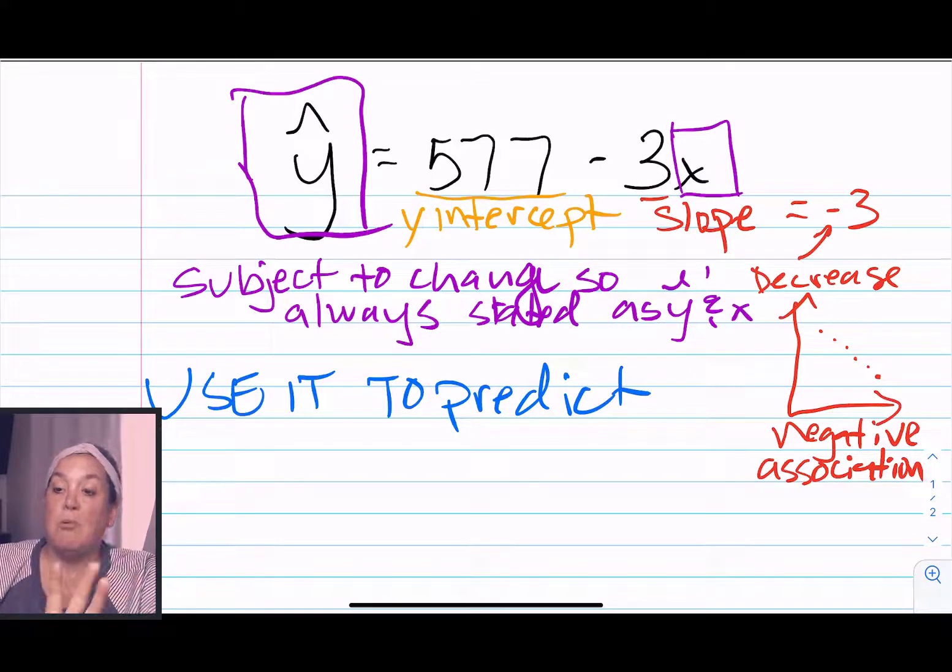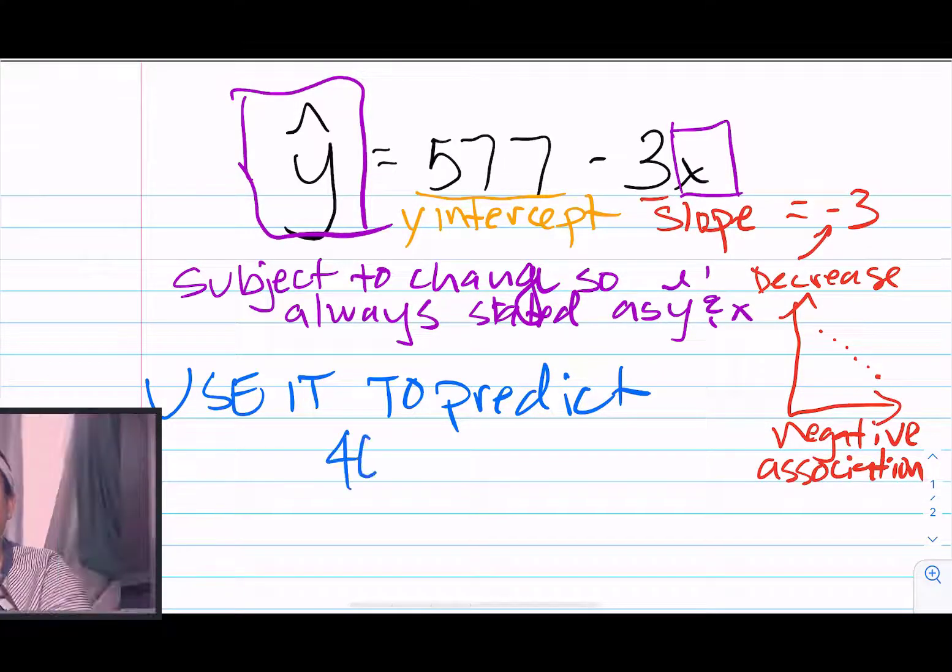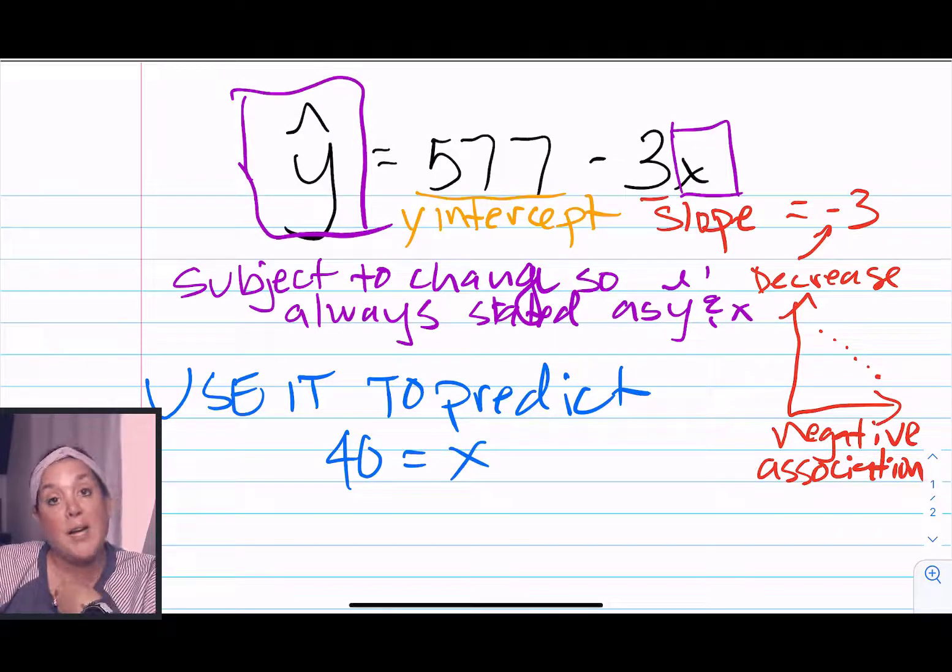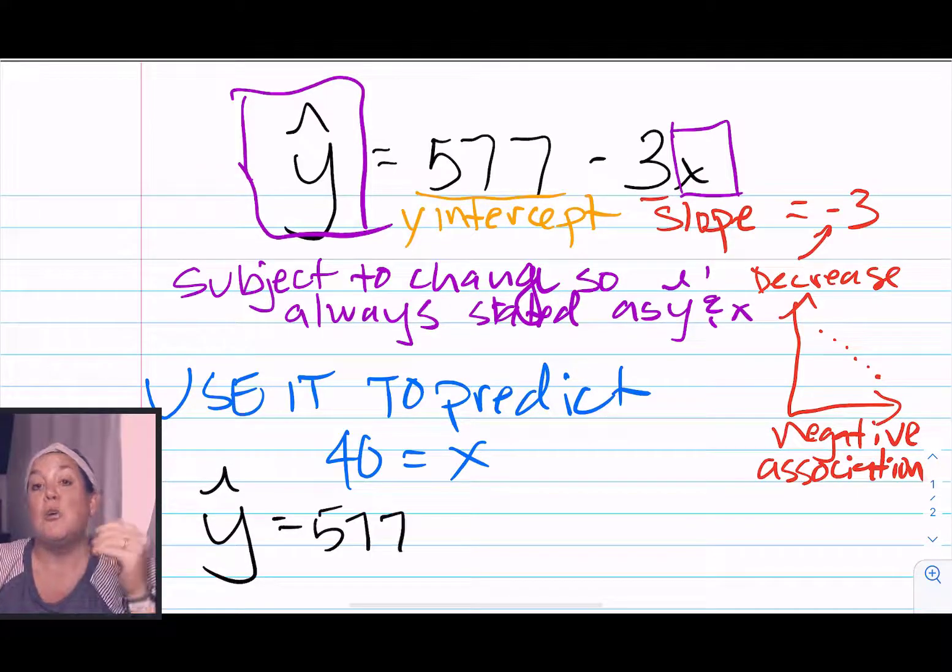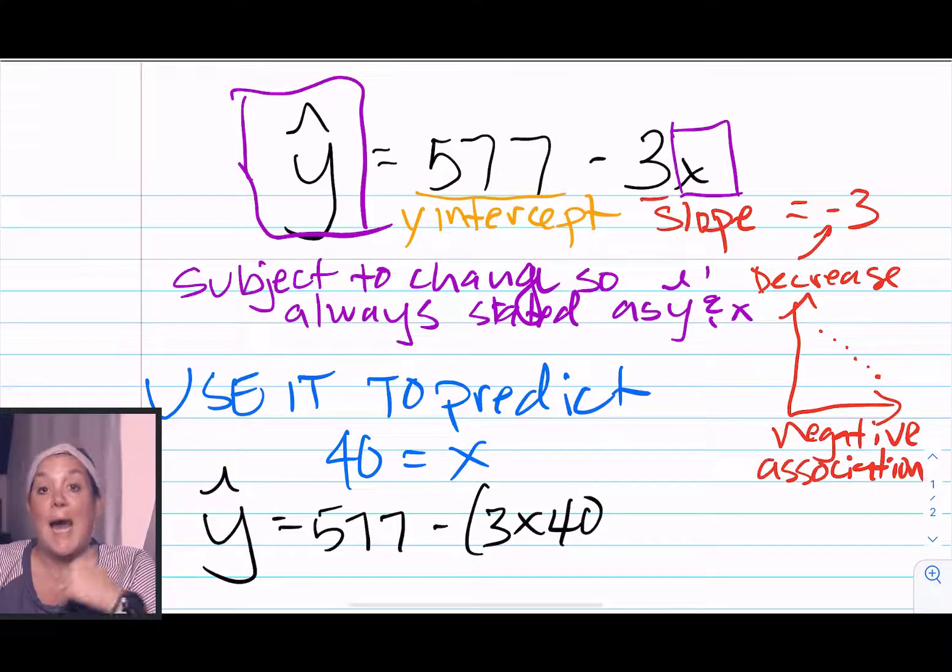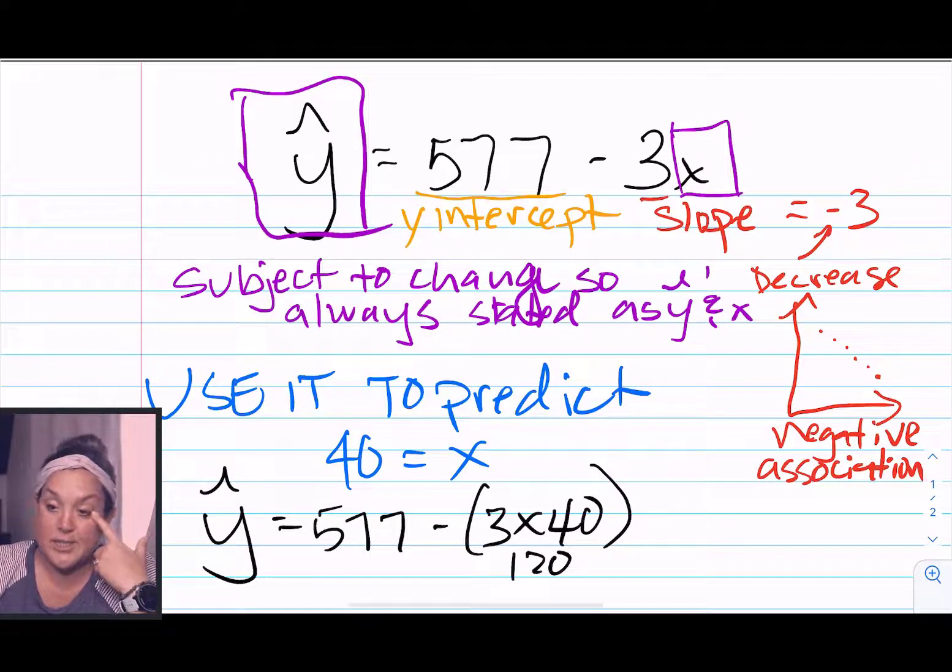So let's say we're predicting for my age. I'm 40 years old, and so the x value would be 40, because remember that x is the explanatory variable, and that was age. So I would plug 40 into that equation, and then I would calculate a predicted distance that I could read a highway sign.